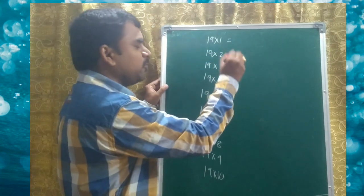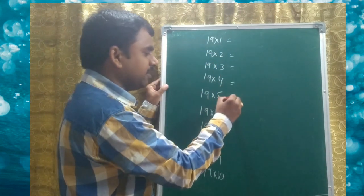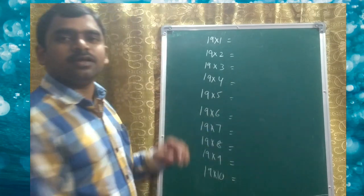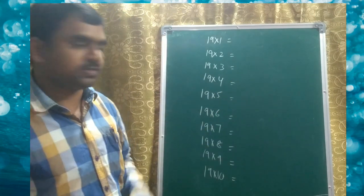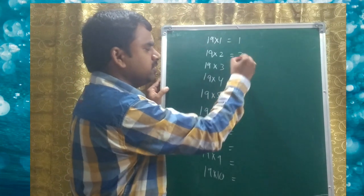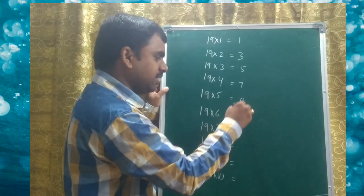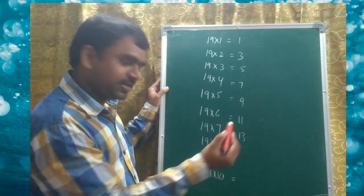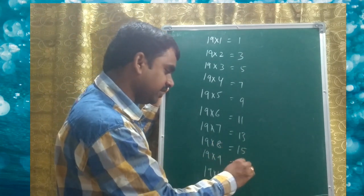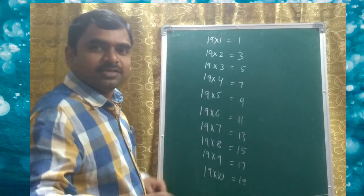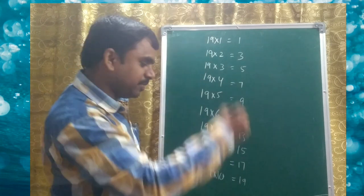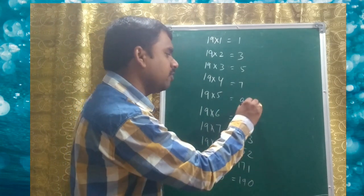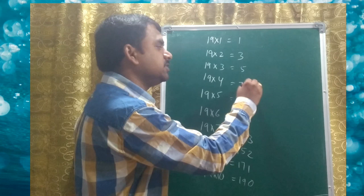I think you know the odd numbers. What are those odd numbers? 1, 3, 5, 7, 9, 11, 13, 15, 17, and 19. OK, so from the bottom you can write 0, 1, 2, 3, 4, 5, 6, 7, 8, 9. It's simple!